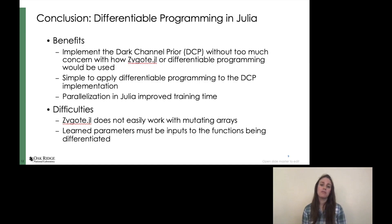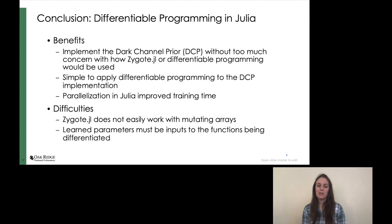In conclusion, differentiable programming in Julia was pretty easy to do. We were able to implement the dark channel prior without too much concern about how Zygote or other differentiable programming would be used. It was simple to apply differentiable programming to our implementation, and parallelization in Julia improves the training time. A few of the difficulties were that Zygote does not easily work with mutating arrays, and that learned parameters needed to be inputs to the functions being differentiated. But overall, I would recommend using differentiable programming in Julia and would definitely do it again. Thank you for listening!